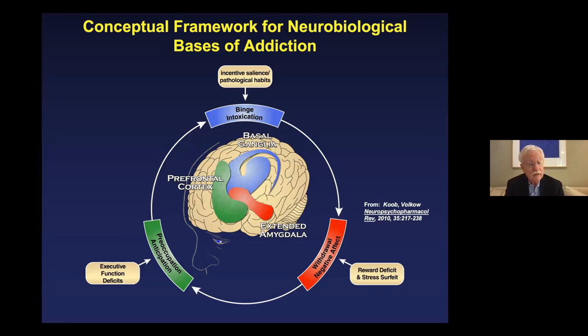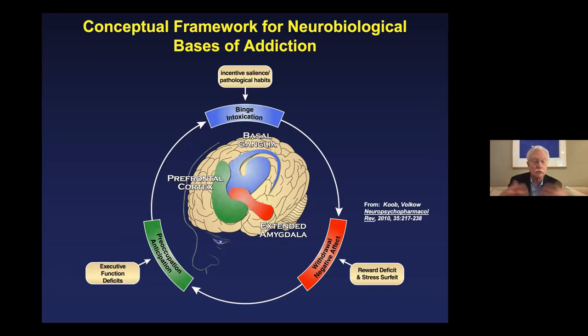The prefrontal cortex — the green area shown here — is the front end of our brain where we make decisions and where executive function resides. We find there are deficits and loss of function in the prefrontal cortex. Since it is the overall controller of the basal ganglia pleasure system and the extended amygdala fear and stress system, you can understand how all three interact.